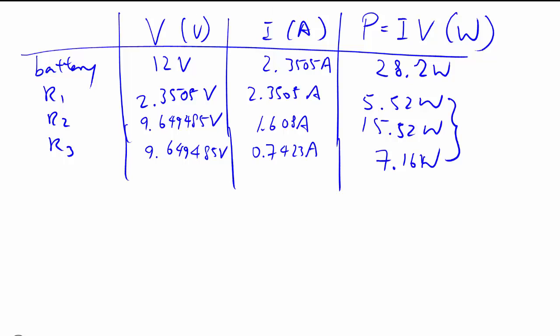And just as a quick check as well, you can see that the battery supplies a certain amount of power. And when you add up the power used up by your resistor, it also adds to 28.2 watts. Because everything in the battery supply should be used up by the resistor.